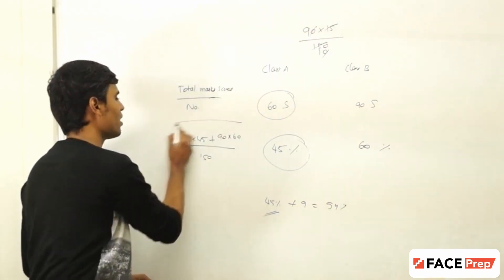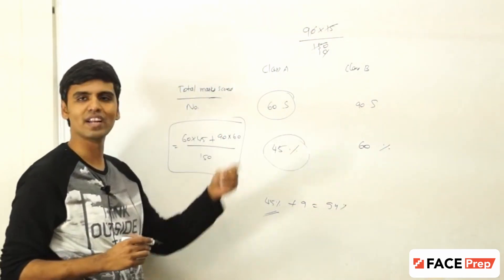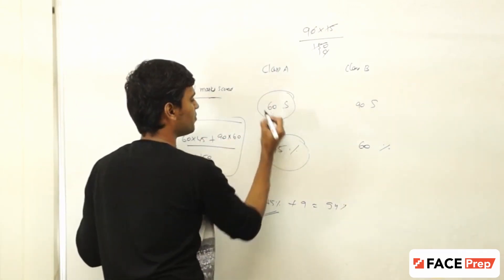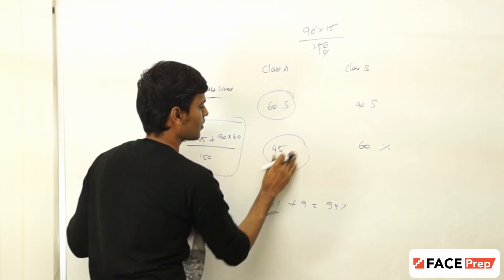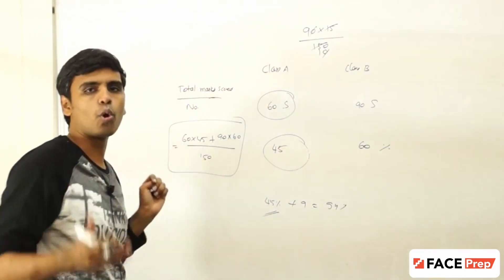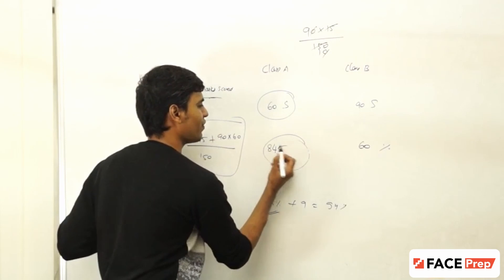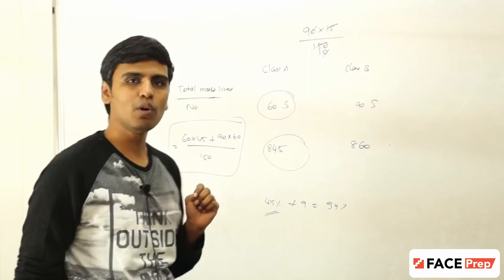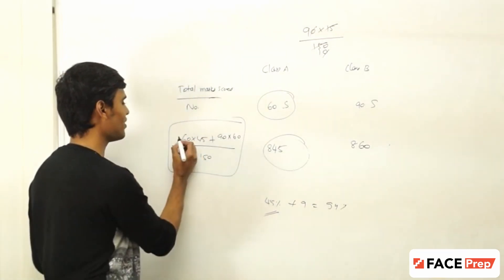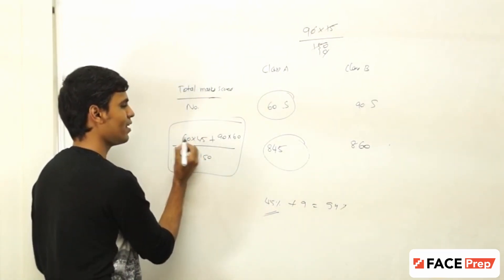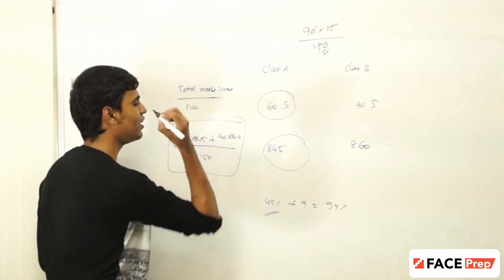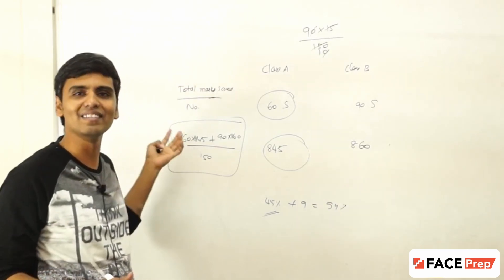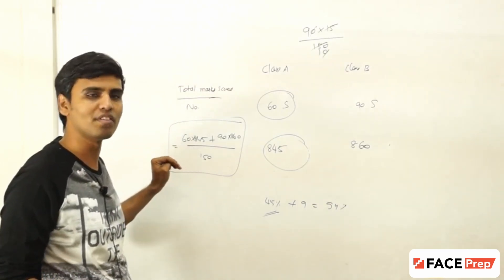Now, why should you use this computation instead of the traditional one? This is a much easier approach. For example, let's say the 12th total of class A is 845 and the 12th total of class B is 860. Imagine how difficult the traditional computation becomes — 60 into 845 plus 90 into 860. That is a much more difficult calculation to perform.